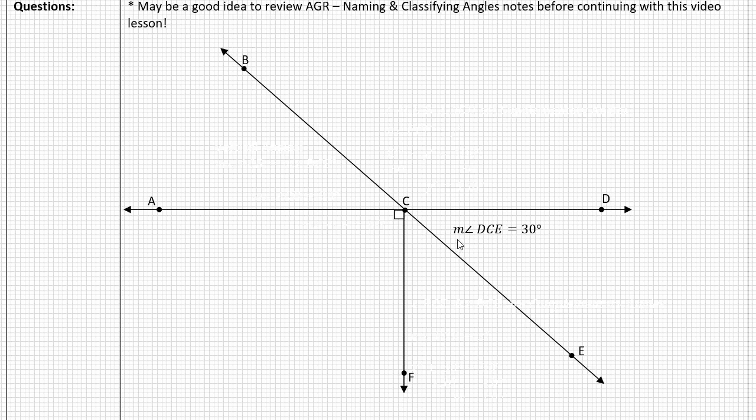All right, so as I mentioned, they gave us two angle measurements. Here's the first one. So they're telling us that the measure of angle DCE, D C E, this distance here, is 30 degrees.